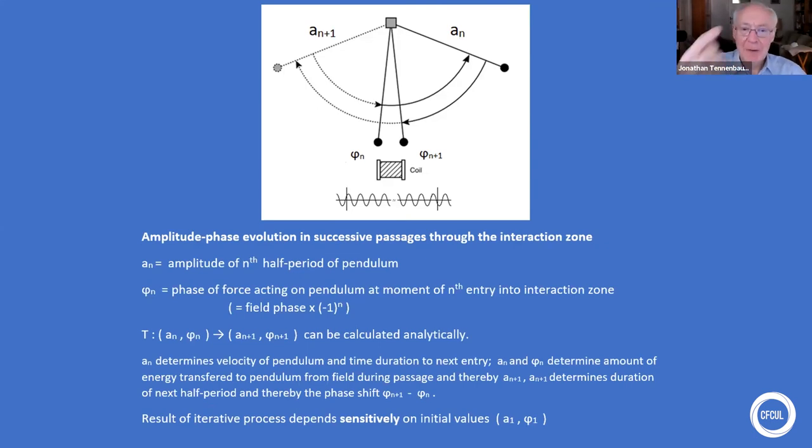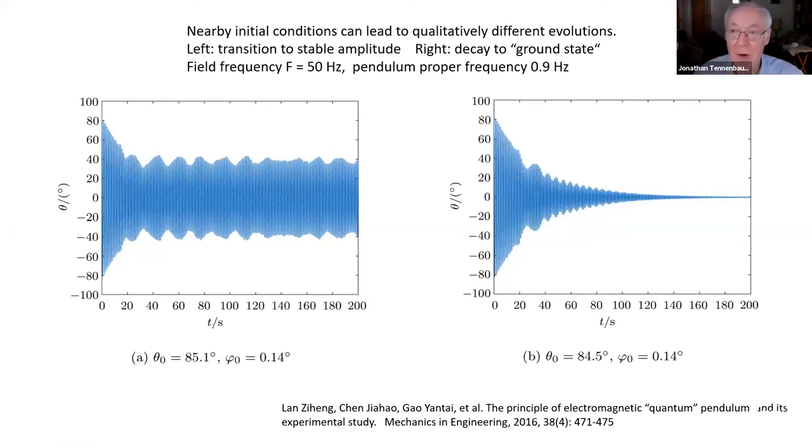You have a series of passages through the interaction zone where you have a change in amplitude and a change of phase. So you can iterate, you can express this mathematically, the transformation from one oscillation to the next. You take usually a half oscillation, an entry, either one direction, the other direction. So you can iterate this and look at what happens in the phase space. And you find that the result of the process depends very sensitively on the initial conditions. Here you see two examples. This is an actual measurement of a pendulum from China. Here you see it released at 80 degrees and it goes into a mode and here you release it almost the same but a different phase and it decays to the ground state.